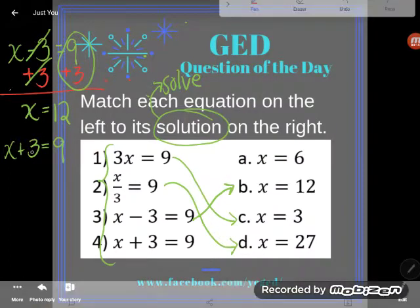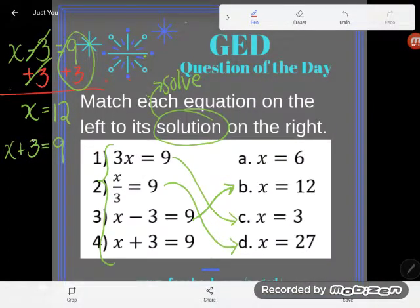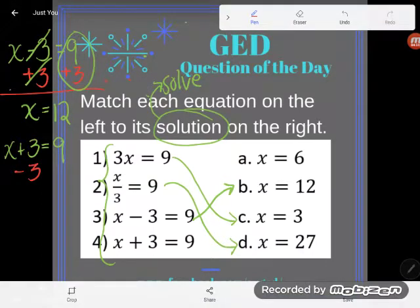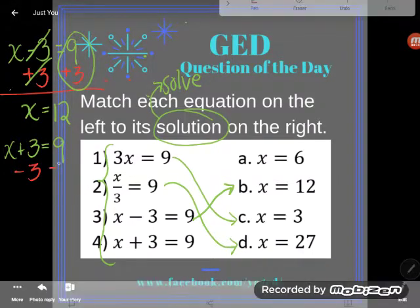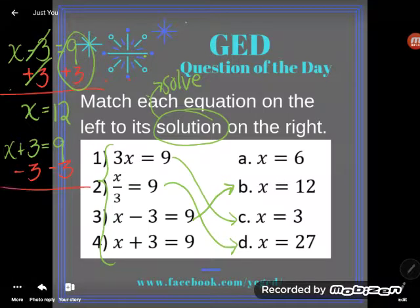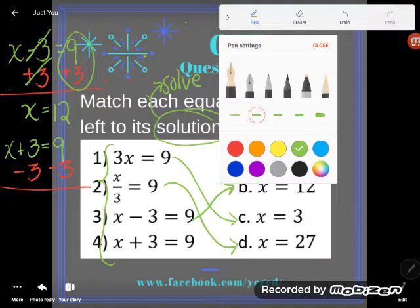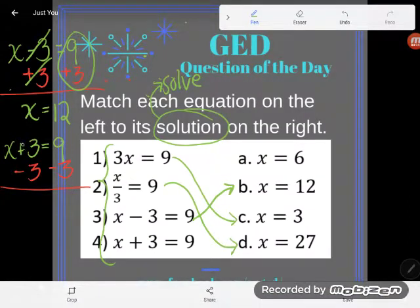You get rid of a number by doing the opposite. So the opposite of add is subtract. So I will subtract three. Now the rule of solving is you can do whatever you want as long as you do it to both sides. So I will subtract a three from that side as well.